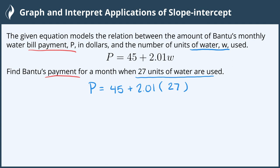Now we can go ahead and do the order of operations. So we'll multiply first 2.01 times 27, which in my calculator is 54.27. So P equals 45 plus 54.27.